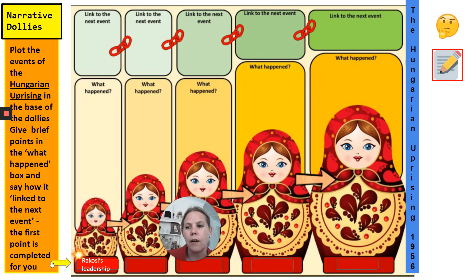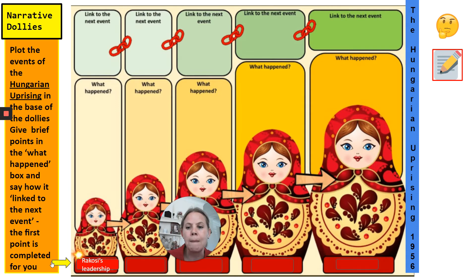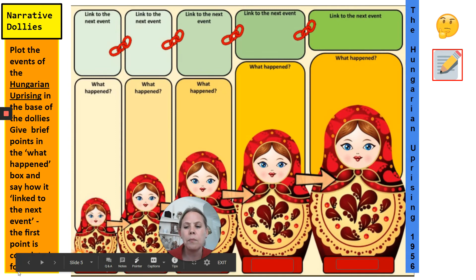There is another narrative dolly slide, but this one is on the Hungarian Uprising, 1956 — last week's tasks. Along the bottom in the red boxes you need to put each part of the Hungarian Uprising 1956. Make sure that you're not just talking about the reasons for the uprising, but that you're talking about the uprising itself and the consequences of the uprising — so it's the whole story. I've started this one with Rucosi's leadership. Put your points along the bottom and then work upwards on top of each of the dollies.